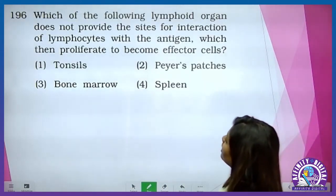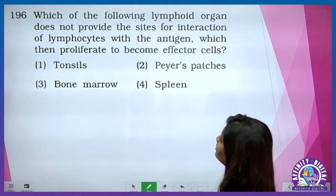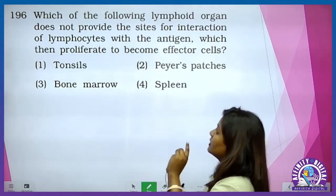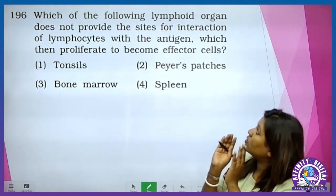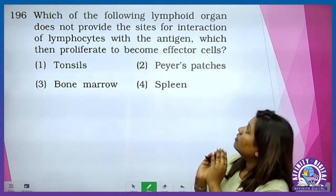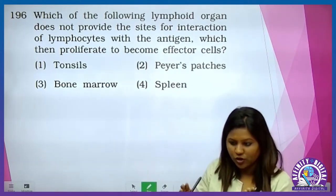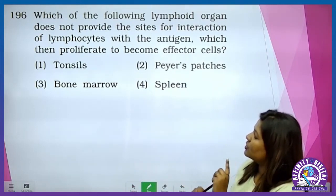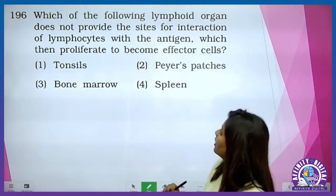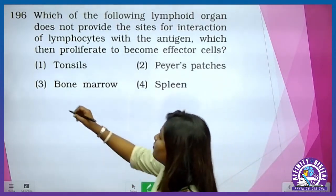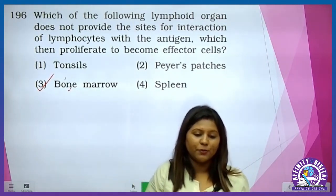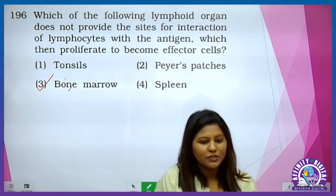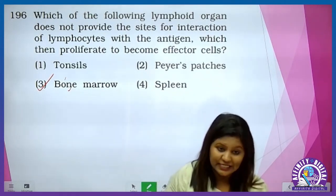Which of the following lymphoid organs does not provide the site for interaction of lymphocytes with the antigen, which then proliferate to become effector cells? It is the primary lymphoid organ — bone marrow. Bone marrow is responsible for the production, proliferation, and maturation — but not for interaction. Baqi jo hai woh secondary hai — woh interaction ke liye jagah provide karta hai.